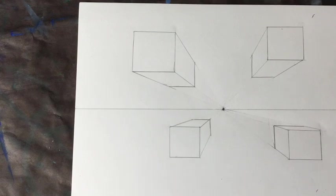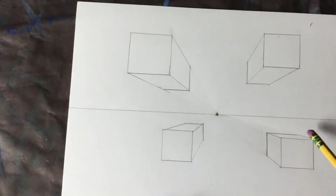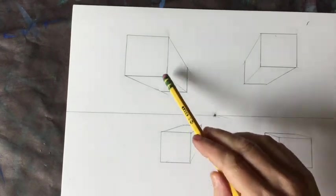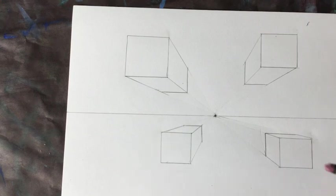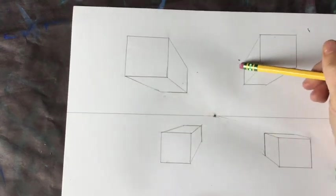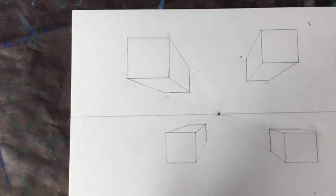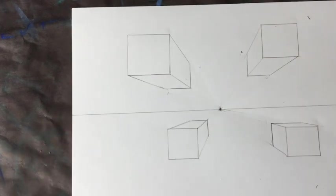Okay, and there you have four cubes, two below the horizon line, two above the horizon line. And you can notice the different sides of these cubes that you're able to see depending on its placement on the horizon line. So have fun playing around with this and maybe even try out some different shapes and see if you can make them three-dimensional within a one-point perspective world.